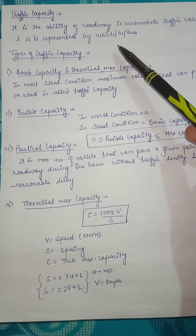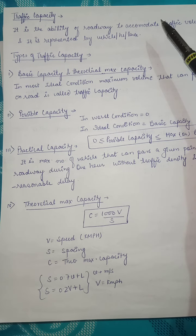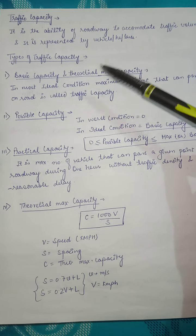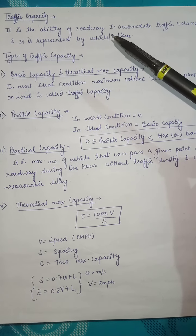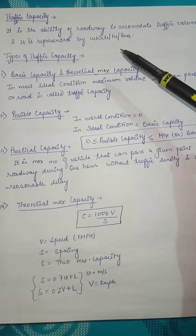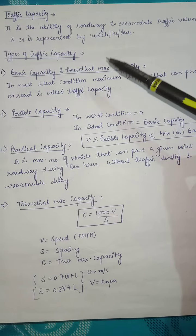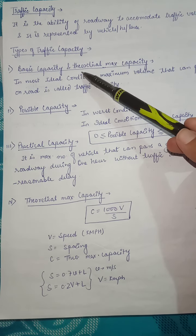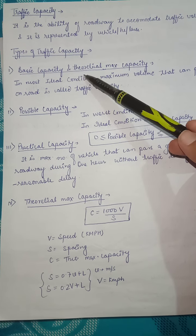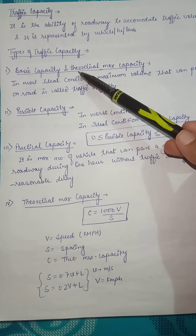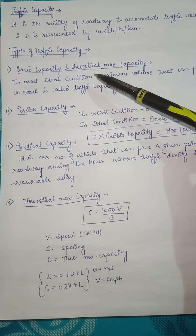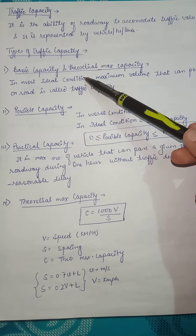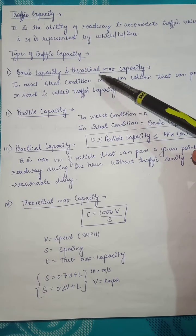This is our traffic capacity — the maximum number of vehicles on a roadway. Now let's see how many types of traffic capacity there are: basic capacity (which we call theoretical maximum capacity), possible capacity, and practical capacity.